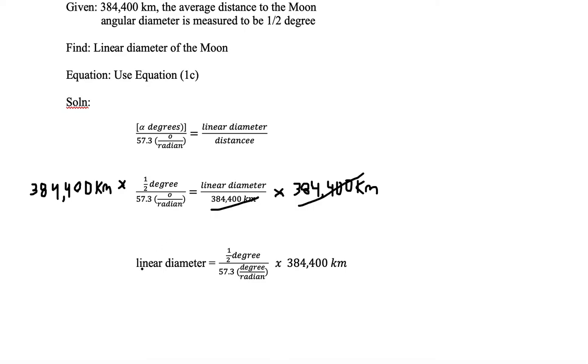Now we've done that. We put linear diameter on its own side and keep the rest the same: half a degree divided by 57.3 degrees per radian, multiplied by 384,400 kilometers.